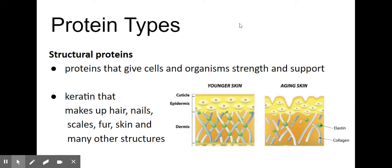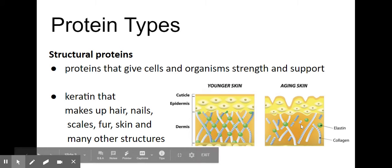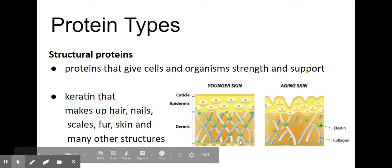The second type is structural proteins, and these are the things that make up our bone, skin, hair, things like that. This is a picture of elastin and collagen. You'll notice that the collagen is nice and firm in a nice structure, and then as you age, it starts to break down, which is what causes aging skin.